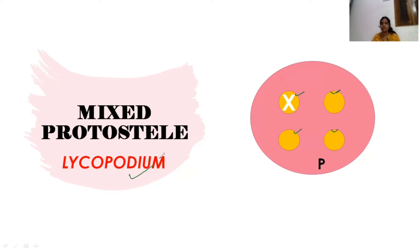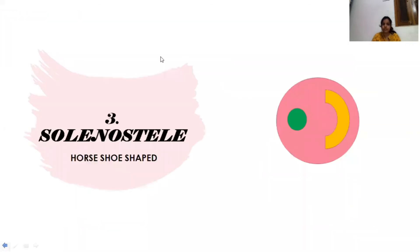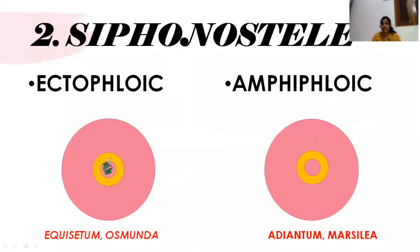Now we have the second type of stele: siphonostele. Siphonostele is a type of stele in which pith is present — the central part is a complete pith. These siphonosteles are further classified into two groups.